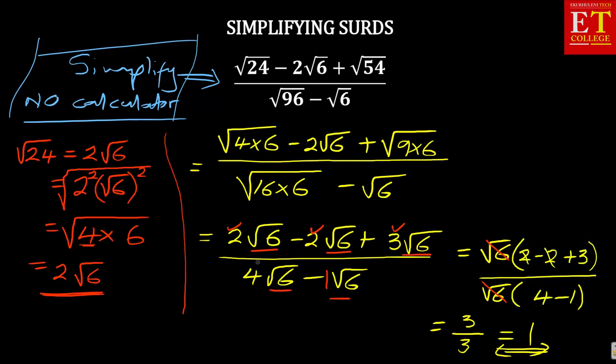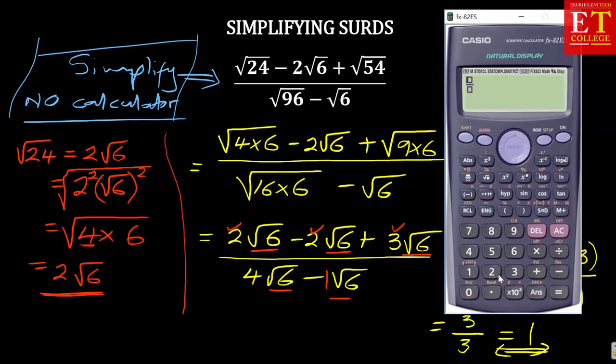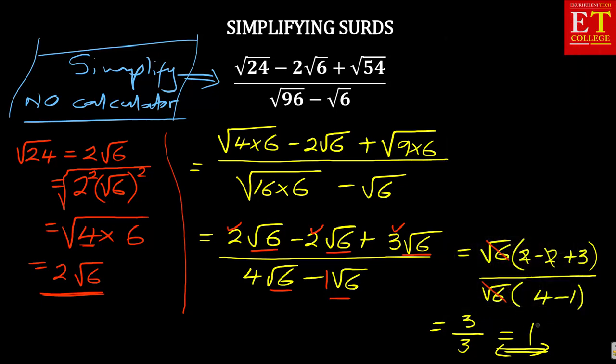Now, let us calculate it with our calculator and see what we're getting. So if I can use a calculator to calculate the answer, I have got square root of 24 minus 2 square root of 6 plus square root of 54, then you come down, and then you've got square root of 96 minus square root of 6. And then if you simplify that, you get a 1, which is the same one that we got when we were calculating without using a calculator. So in this case, it means our answer is correct.